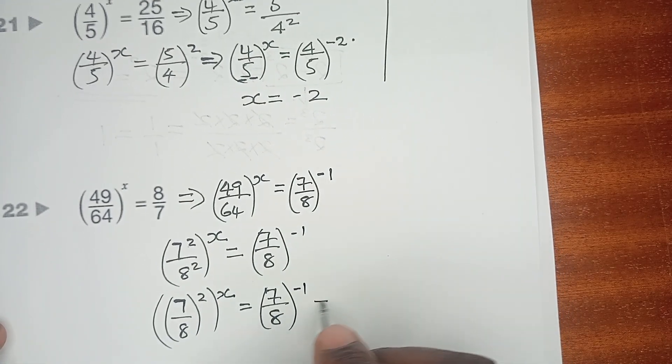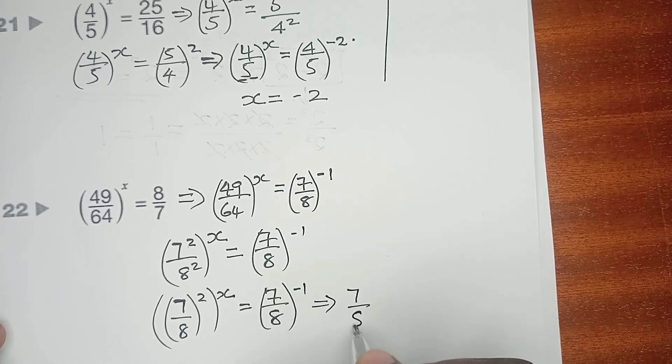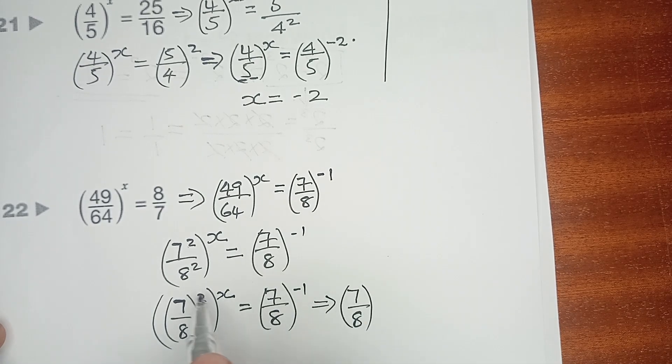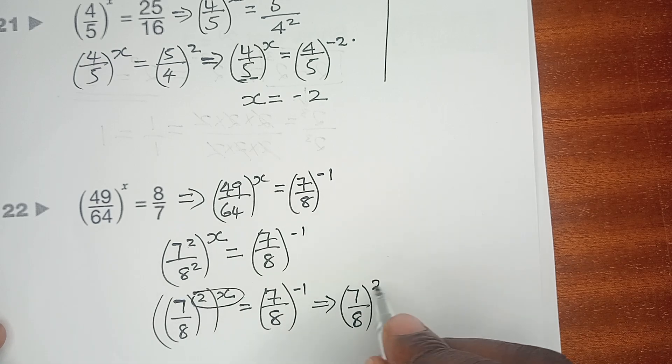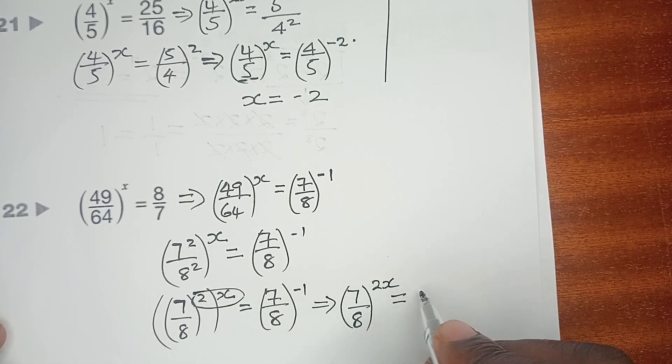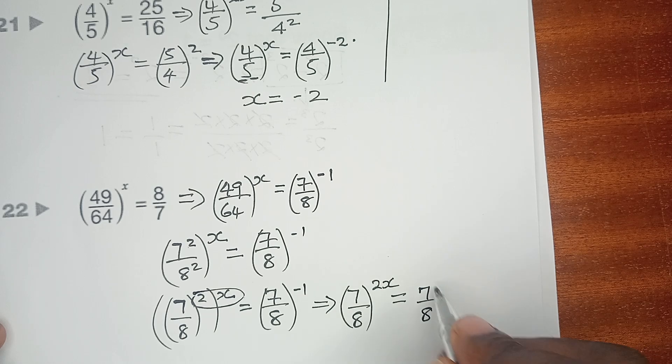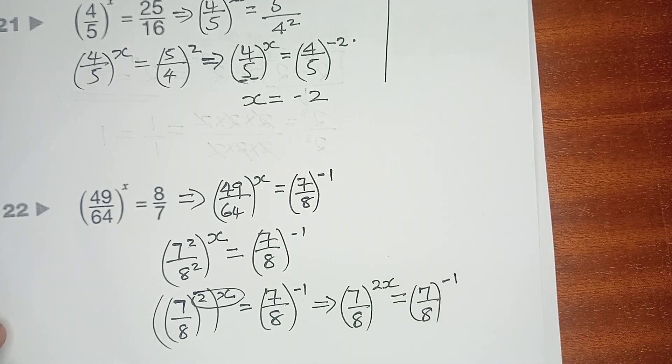It goes without saying, now we are having 7/8, the product of the two indices, which is 2X, equals (7/8)^-1.